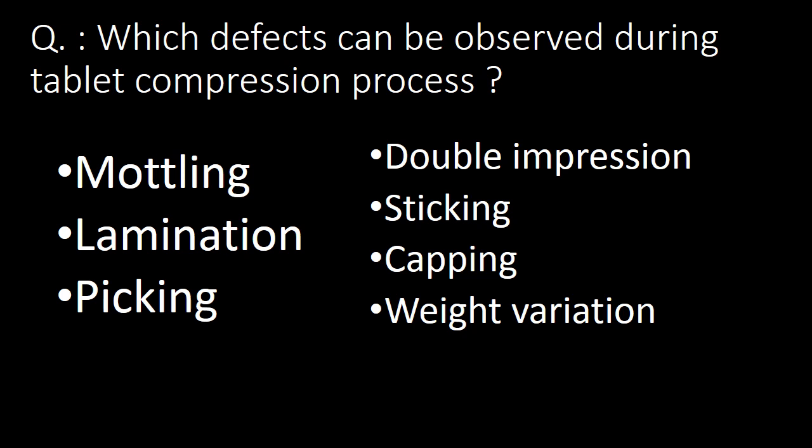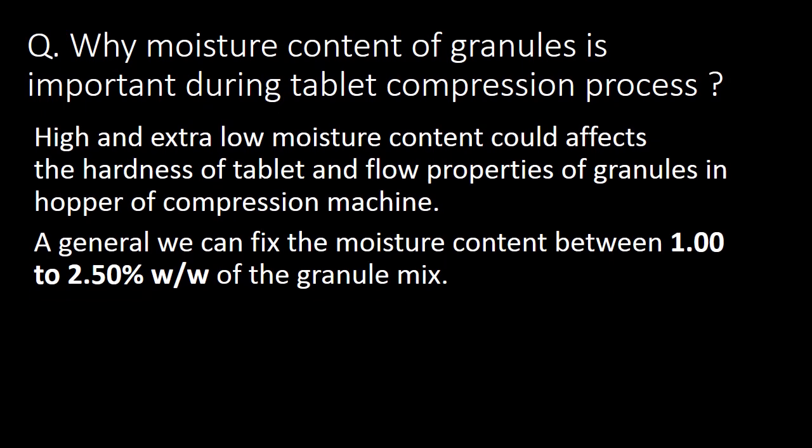Next question: which defects can be observed during tablet compression? High and extra low moisture content could affect the hardness of the tablet and the flow properties of granules in the hopper of the compression machine. In general, moisture content should be fixed between 1.00% to 2.50% weight by weight of the granule mix.